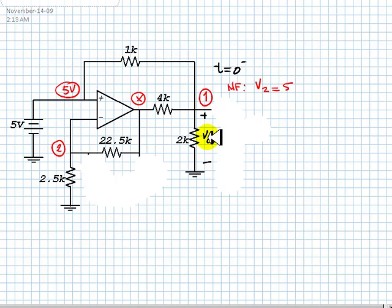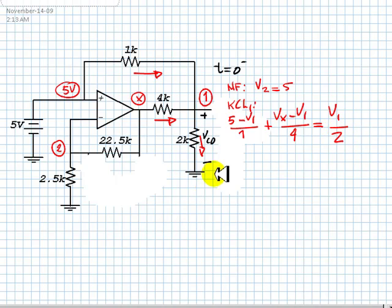V2 is 5 volts. And we can write a KCL equation for node 1. For that, we need branch currents assumed with this direction. In case we have one, is 5 minus V1 over 1 kilo, that is the one on the top. Plus Vx minus V1 over 4 kilos, that is this current, equal to the current through this one, equal to V1 over 2 kilos. And that takes care of that.